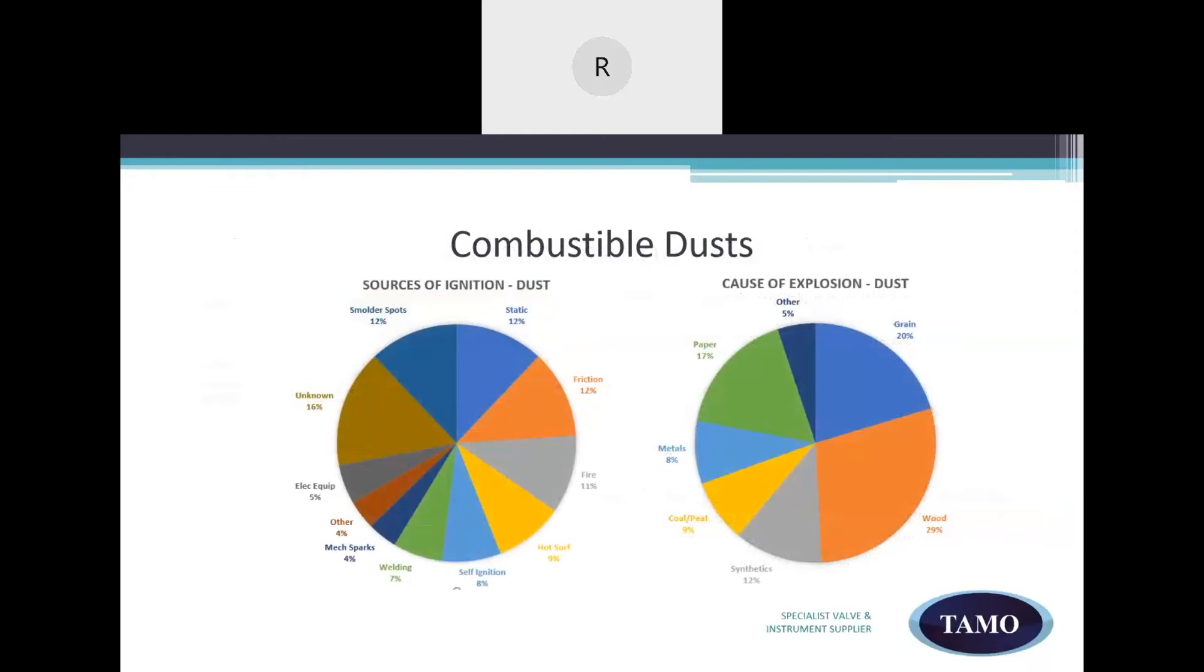Here we have a combustible dust graph. When material is ground into a fine dust or powder, the dust or powder will form an explosive atmosphere with air. Here are some examples of flammable dust classified as Group A and their role in causing explosions. You will see that electrical equipment is responsible for 5% of these sources of ignition.